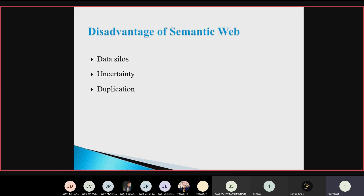Then disadvantages of semantic web. First is data silos — a data silo is a collection of data held by one group that is not easily or fully accessible by other people or users. Finance, administration, and other departments need different information for their work and this is not accessible to all users. Second is uncertainty — many searches provide different answers to a query, and when results match a search differently, uncertainty occurs.